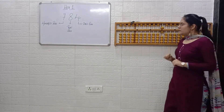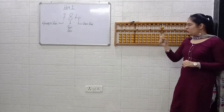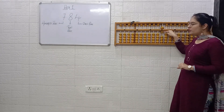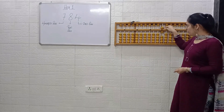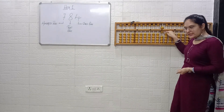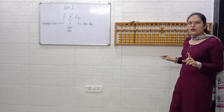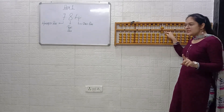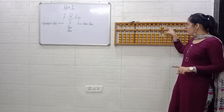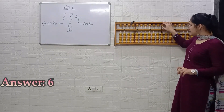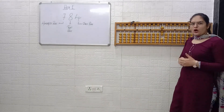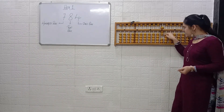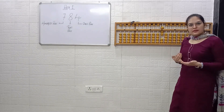Next — how will you read this? Use your index finger. First we will read the Heaven bead, then we will move to the Earth beads. You should not say '5 and 1' separately — you say 5, 6. Answer is 6. Next example: 5, 6, 7. Answer is 7.